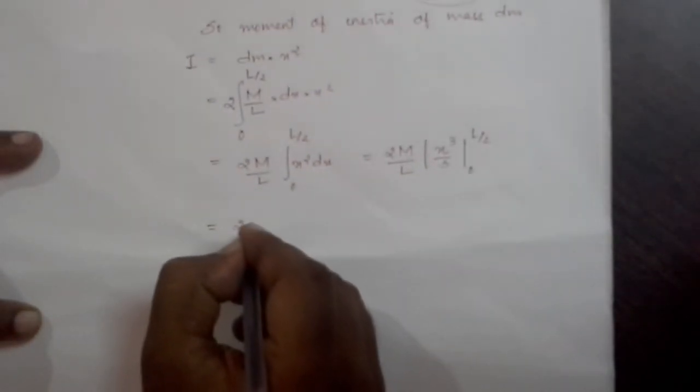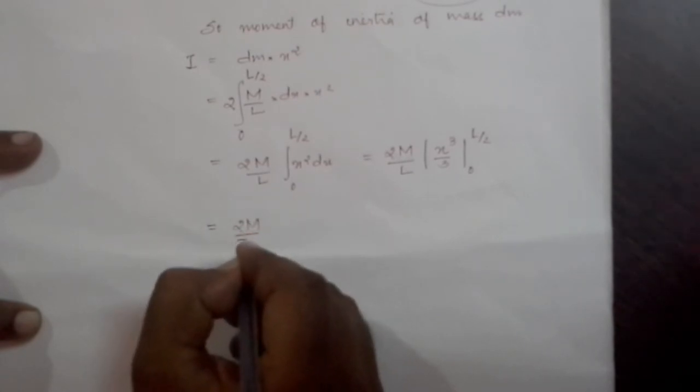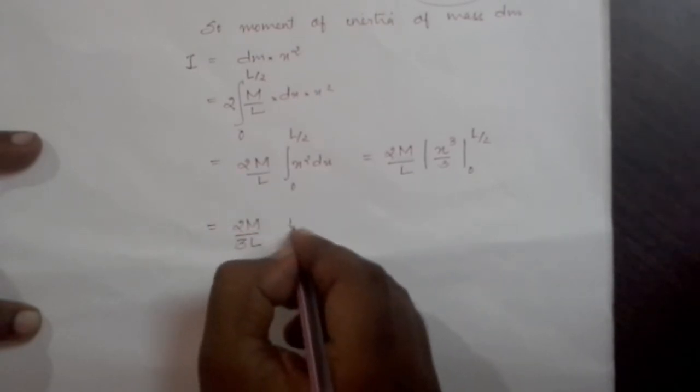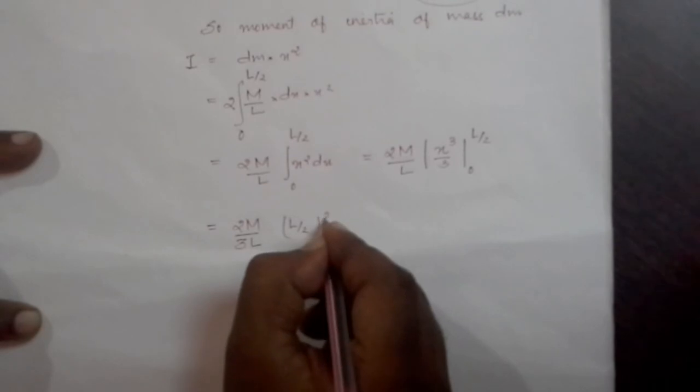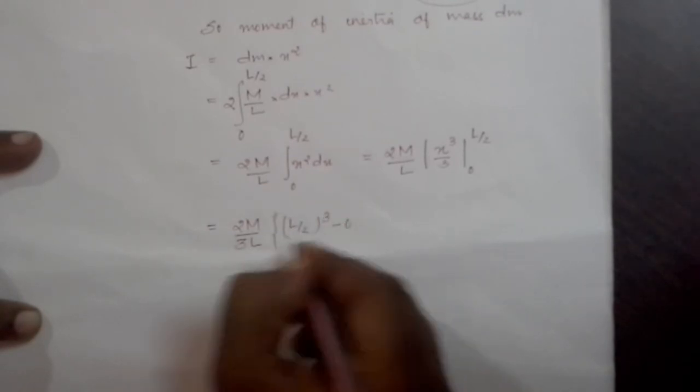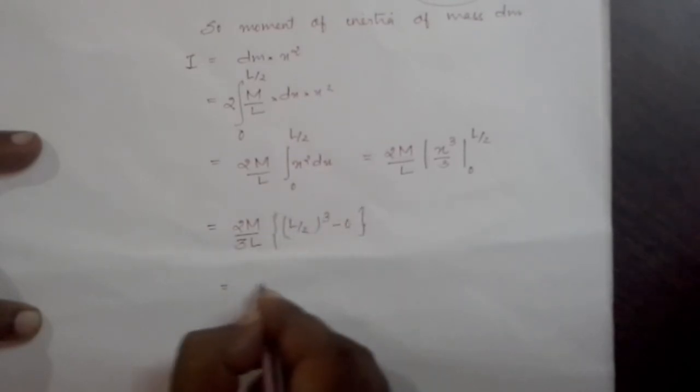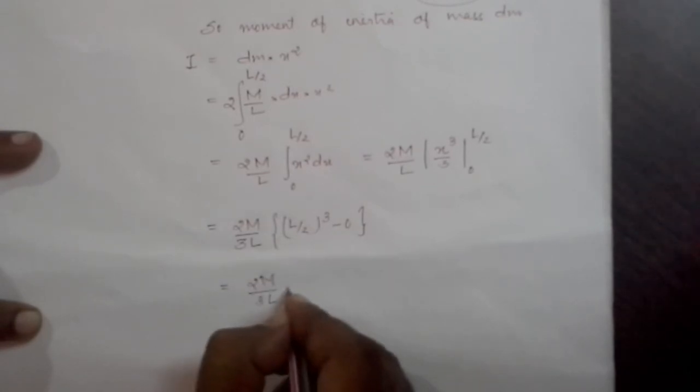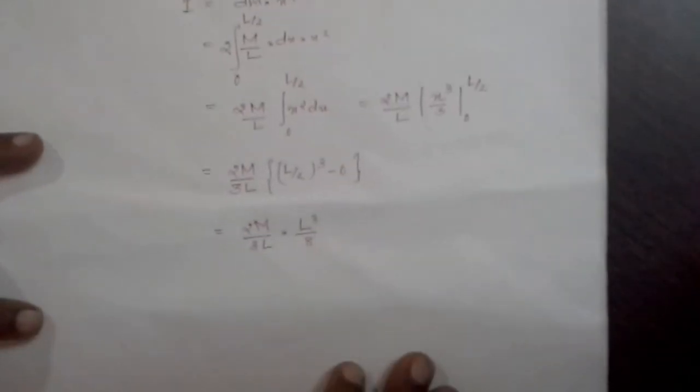So that will be equal to 2M by 3L into L by 2 whole cube minus 0. So that will be 2M by 3L into L cube by 8.